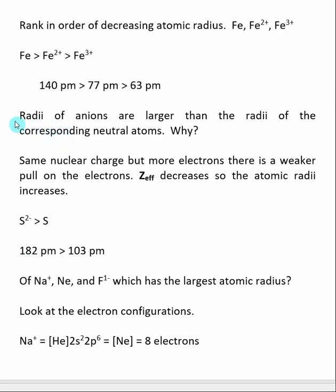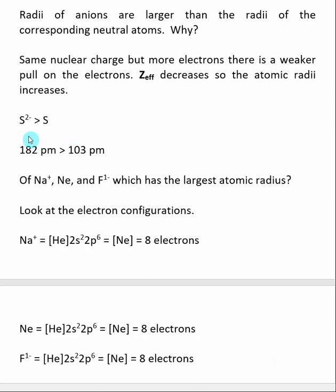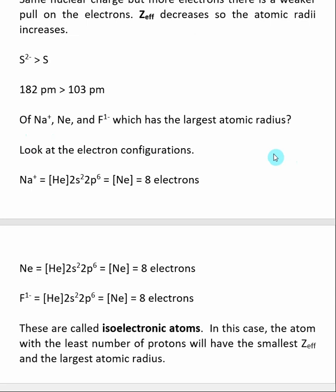When we look at anions, the opposite is true. The radii of anions are larger than the radii of the corresponding neutral atoms for the exact opposite reason. We retain the same nuclear charge, but we're adding more electrons. Now that there are more electrons, there is a weaker interaction between the nucleus and the electrons, so Z-effective actually decreases and the atomic radius increases. For example, sulfur 2- is larger than neutral sulfur. A simple way to remember: making a cation removes something so it gets smaller; an anion adds electrons so it gets bigger.